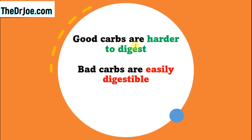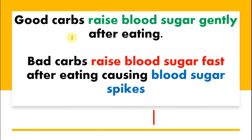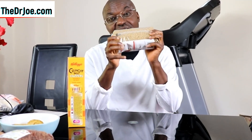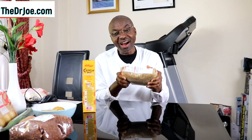Good carbs are harder to digest. In contrast, bad carbs are easily digestible, and you're going to see the implication of this difference in digestibility shortly. What this means is good carbs raise your blood sugar gently after eating, whilst bad carbs raise your blood sugar fast after eating, causing blood sugar spikes. This is brown rice — harder to digest.